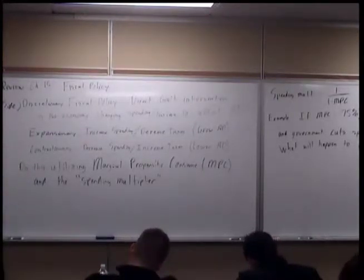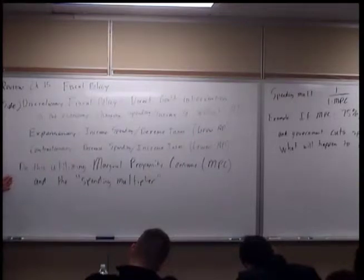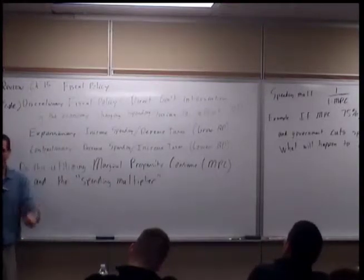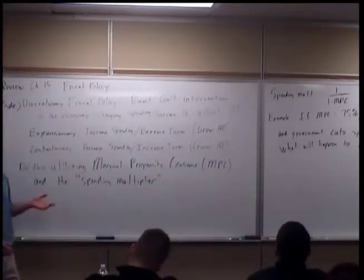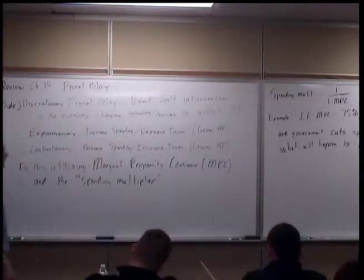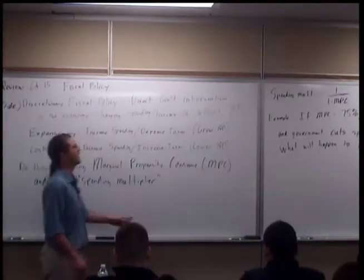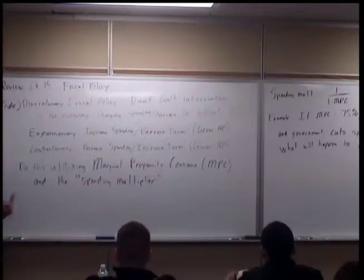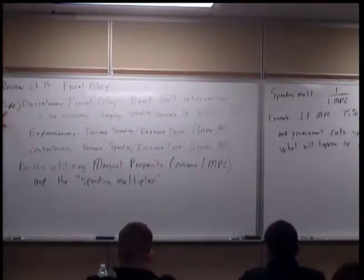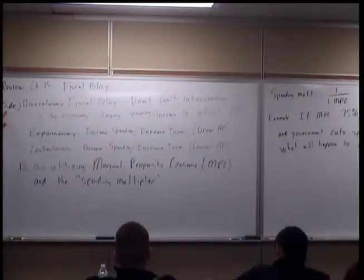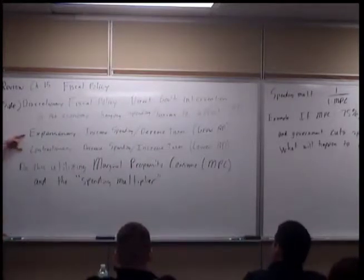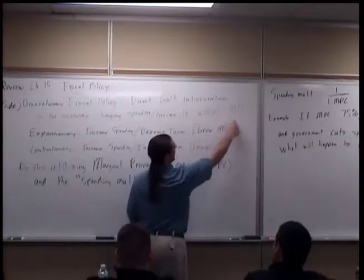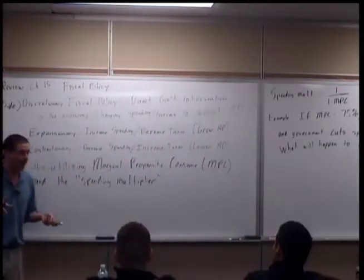Let's do a little bit of review of what we covered last time. We got into Chapter 15, which was fiscal policy. The definition of discretionary fiscal policy is basically the government putting its hand in the economy. The textbook definition is direct government intervention in the economy to change spending and/or taxing to affect aggregate demand. The key is that we're trying to affect the demand side of the economy.